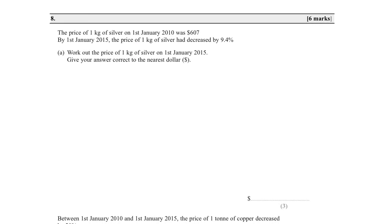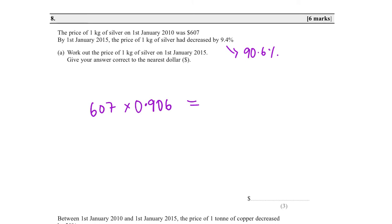Question eight: The price of one kg of silver on 1st January 2014 was £607. By 1st January 2015 it decreased by 9.4%. So 100 − 9.4 = 90.6%, and as a multiplier that's 0.906. 607 × 0.906 = 549.942. To the nearest dollar, that's $550.